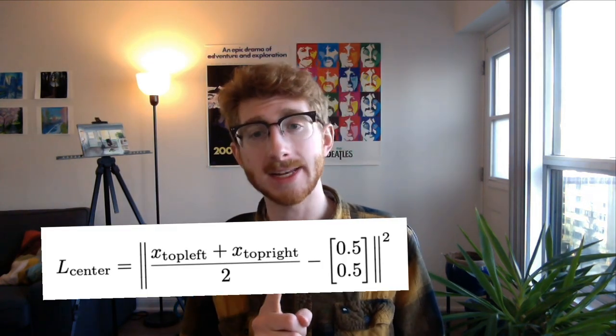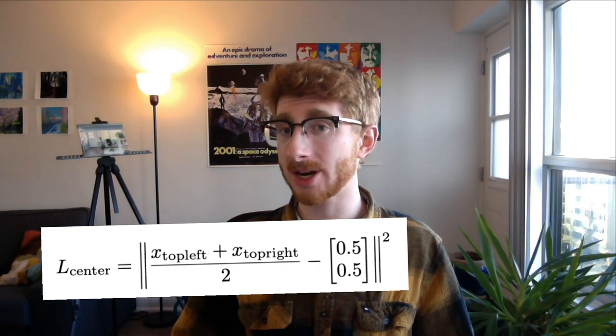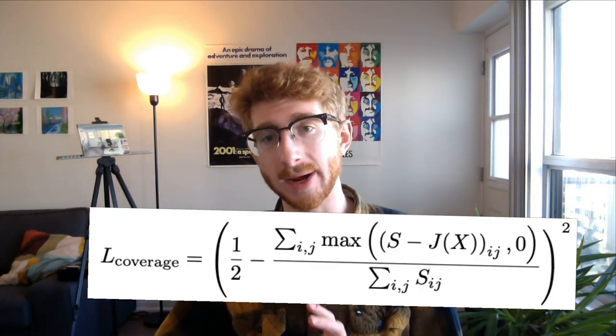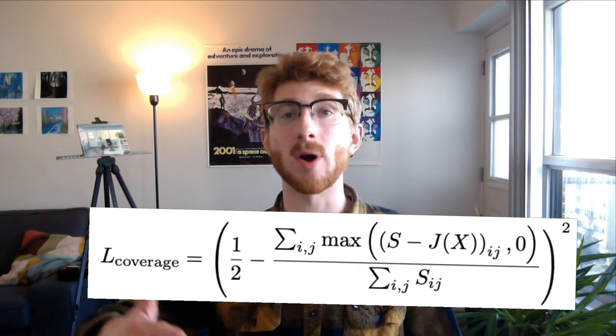So from rule number one, we get two loss terms. The first one incentivizes the middle of the waistband to be in the middle of the object. And number two counts how many pixels of the silhouette are covered by the jeans, and incentivizes that to be exactly one half.